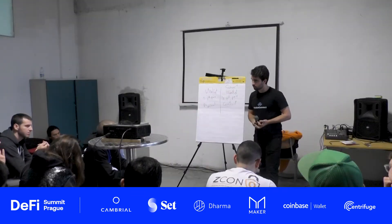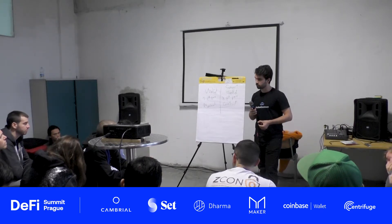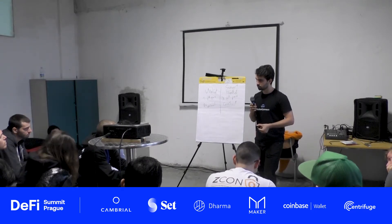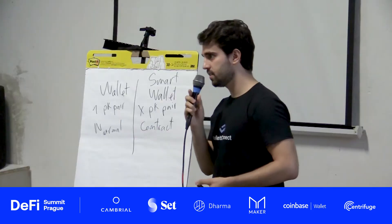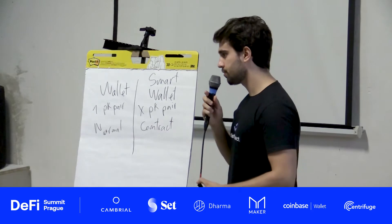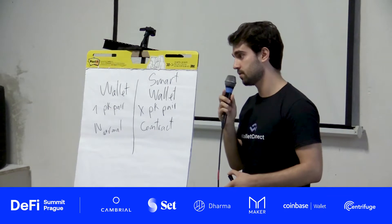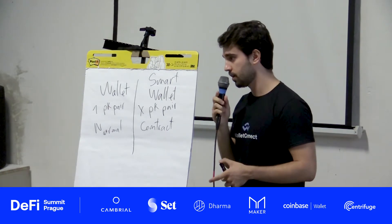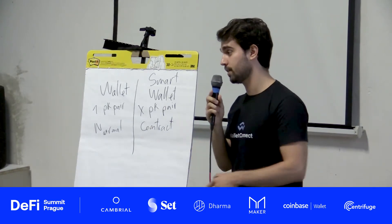Question: is there a standard for the dApp to reimburse the relayer instead of the sender? As development stands now, the metatransaction reward comes from the smart contract, but it would be a great topic for GitHub or Ethereum Magicians to discuss: can we make the reward come from someone else? Can dApps or wallet providers actually pay rewards to relayers so the user doesn't have to handle it?